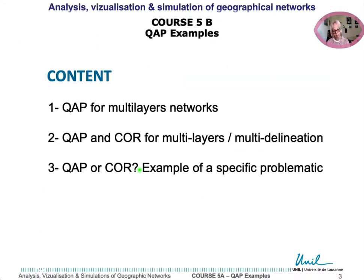Let's see three examples. In the first one, we calculate QAP correlations between different networks linking the same set of cities in a multilayer approach. In the second one, we compare QAP correlation on the whole network with Pearson correlation on nodes and on links in order to evaluate different delineations of cities. For the third example, we will explain why in some cases it is not necessarily better to choose the QAP correlation.